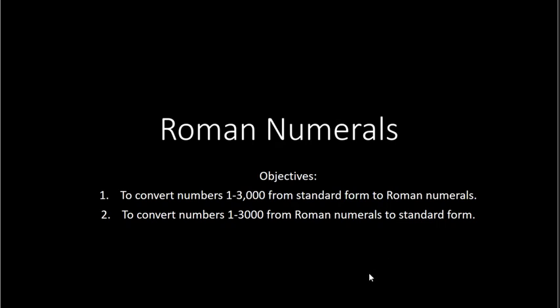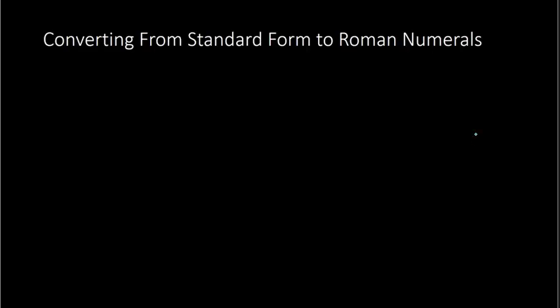I've also noticed it in movies — at the bottom of a disc or someplace, you'll many times see the year in Roman numerals. And there are other places as well, like clocks and other random locations. So that is where we see Roman numerals — it's kind of like a code, a way to interpret from Roman numerals to standard form.